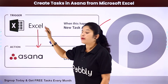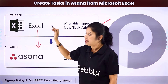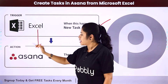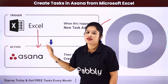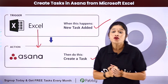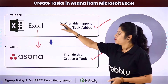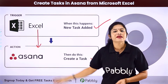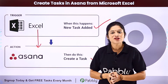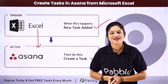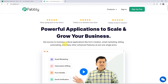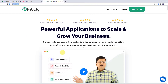Here, your trigger application would be Microsoft Excel and your action application would be Asana. So, how can you integrate both these software applications using Pabbly Connect? For that, you need to come to my screen. To integrate Microsoft Excel with Asana, first we need to log into Pabbly — Pabbly.com. This is the website of Pabbly.